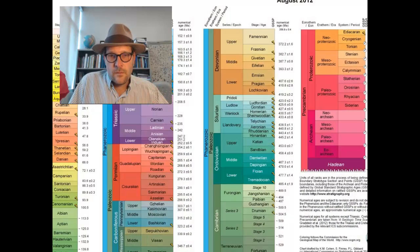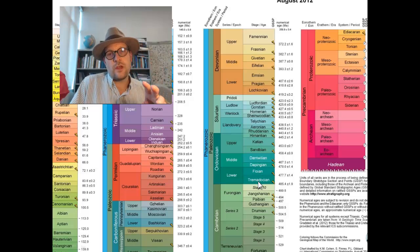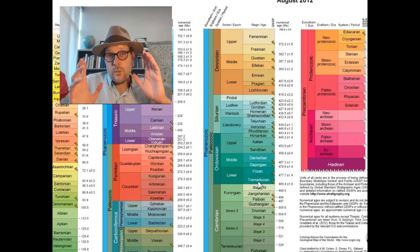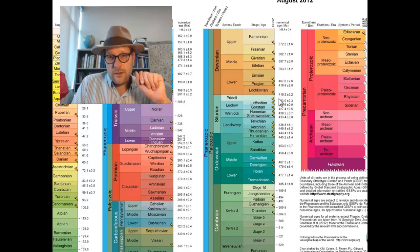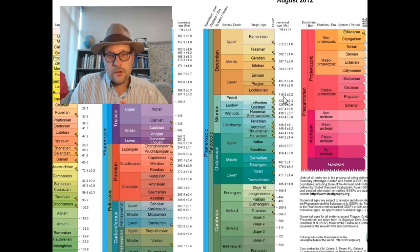Let us zoom in on the Ordovician. The Ordovician is divided into upper, middle, and lower, with each stage or age defined on the fossil record — most stages and ages are defined on marine fossils. Between each stage we have golden spikes and the latest radiometric ages, which are updated every few years, so the dates shift around a little bit.